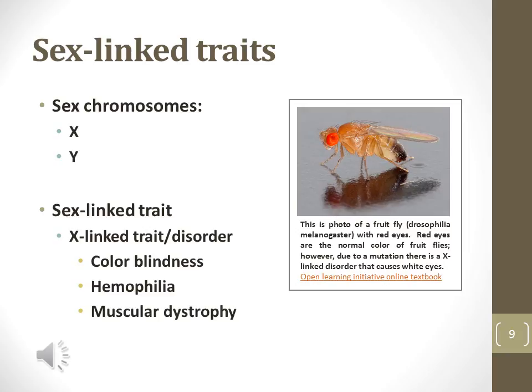Some traits are carried on the sex chromosomes, including color blindness, hemophilia, and muscular dystrophy. Any recessive X-linked trait, like color blindness, is more common in males than females because males only contain a single copy of the X chromosome. So there is no chance of a second allele masking the dysfunctional gene.